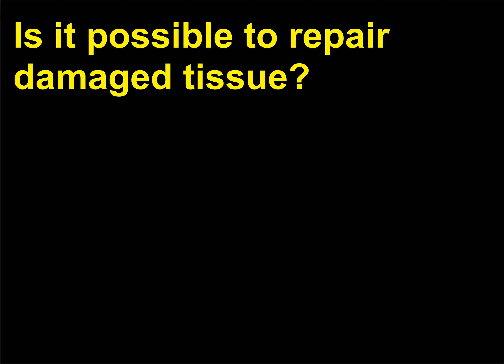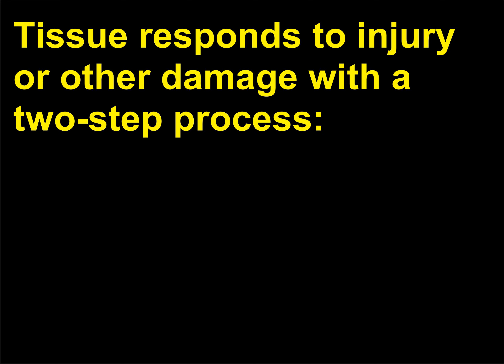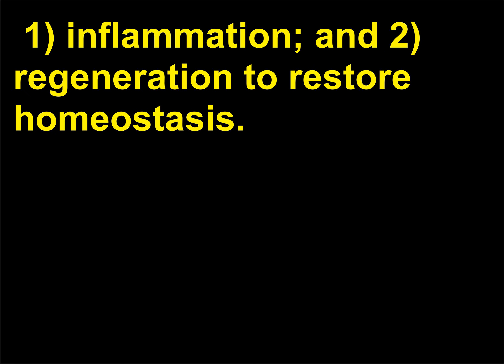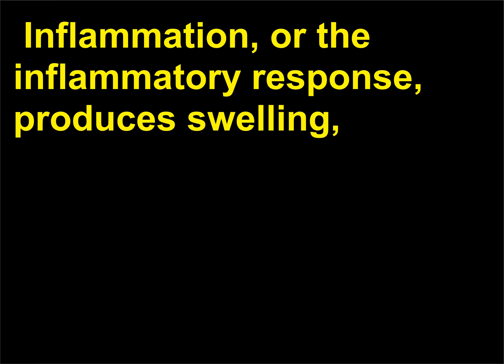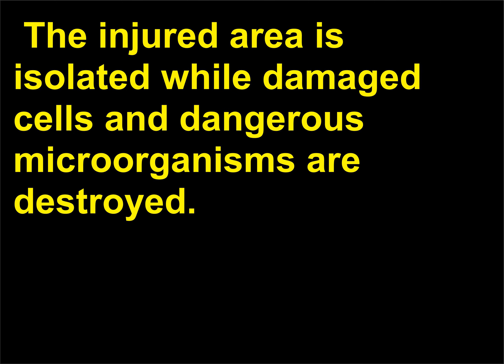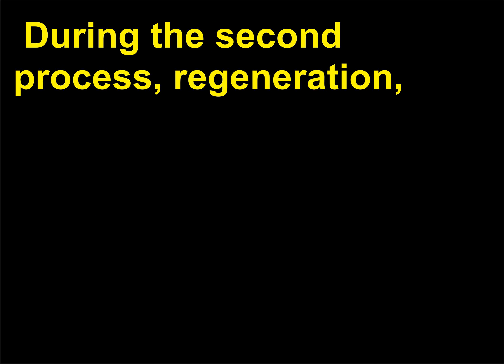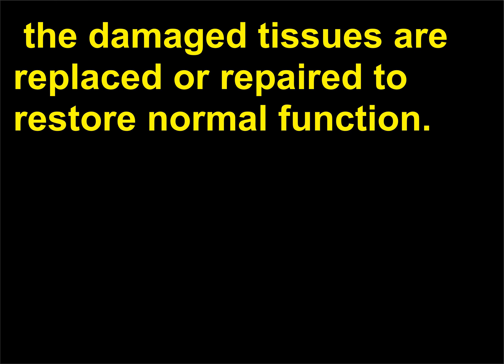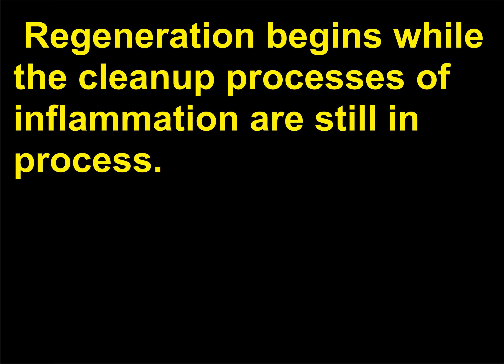Is it possible to repair damaged tissue? Tissue responds to injury or other damage with a 2-step process: 1. Inflammation, and 2. Regeneration to restore homeostasis. Inflammation, or the inflammatory response, produces swelling, redness, warmth, and pain in the area of injury. The injured area is isolated while damaged cells and dangerous microorganisms are destroyed. During the second process, regeneration, the damaged tissues are replaced or repaired to restore normal function. Regeneration begins while the cleanup processes of inflammation are still in process.